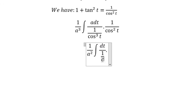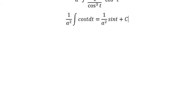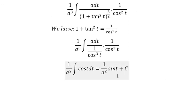You get cos t, because 1 over 1/cos t gives cos t dt. So the integral is 1/a² times cos t plus C. Now we need to convert t back to x.